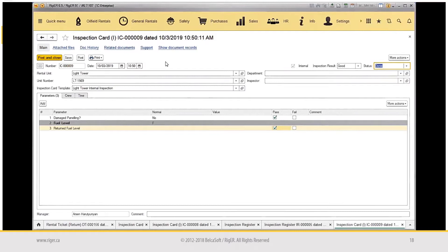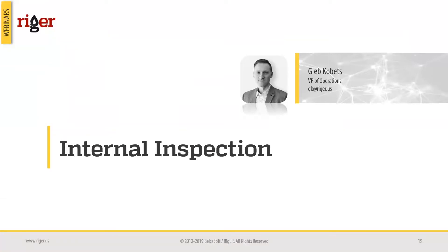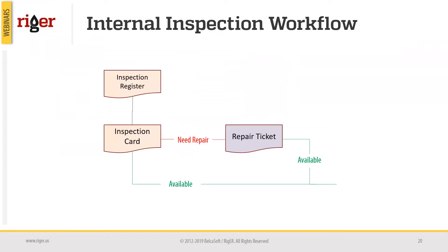That's everything there is to doing an inspection. Now it's clear how we process inspections resulting from a client's job. But we can also have internal inspections in our operations — when companies want to inspect equipment sitting on their yard or in the shop, just to prepare it for upcoming jobs. For these operations, we have internal inspection templates, as Indra already showed us. This is the workflow for internal inspection.